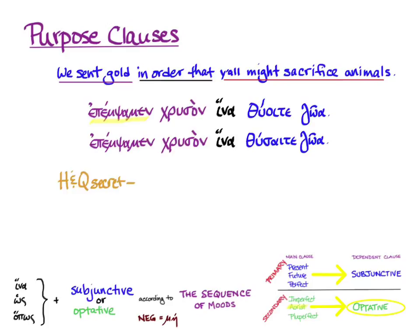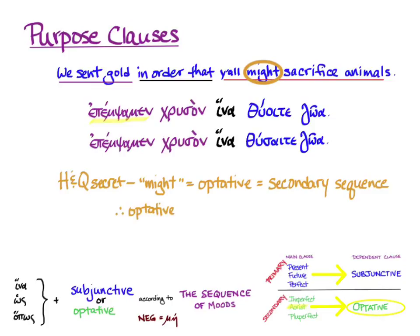Back to Hanson and Quinn's secrets. Look this time at the helping verb 'might.' Hanson and Quinn always translate secondary sequence purpose clauses — the optative ones — with 'might.' So if you see the optative in a purpose clause, translate it as 'might verb.' And vice versa: if you see 'might verb' in Hanson and Quinn, choose secondary sequence and the optative. One thing that helps me remember: the 'i' in 'might' reminds me of the iotas in all the optatives. So when I see a purpose clause with the optative, I remember to translate 'in order that she might verb.'